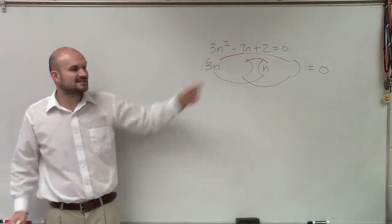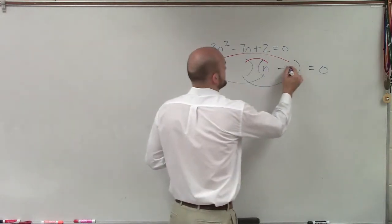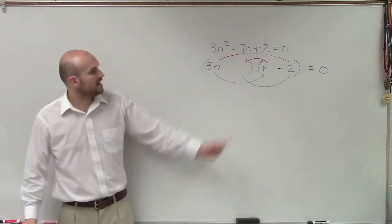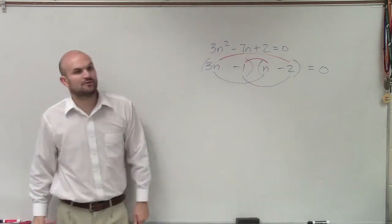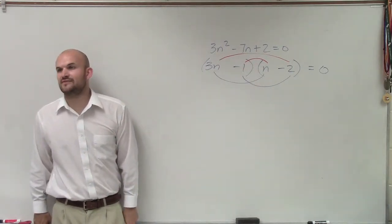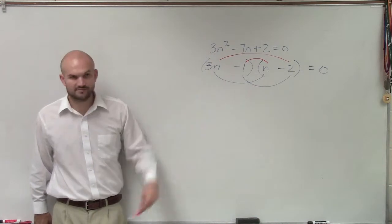So what I notice is if I do 3n times negative 2, that will give me a negative 6n. And then plus a negative 1 times n will give me negative 1. Negative 6n plus negative n is negative 7n. There's your final answer.